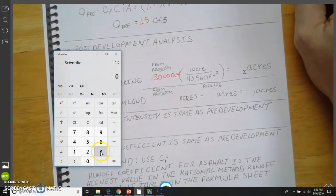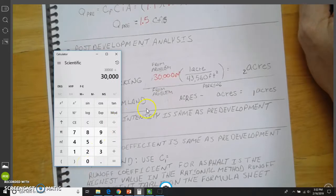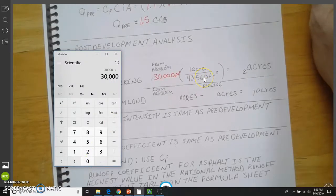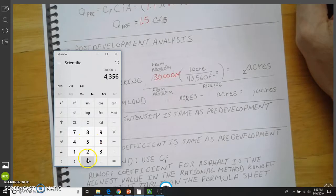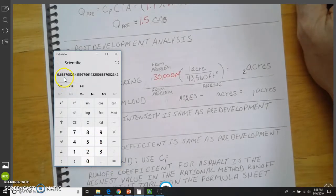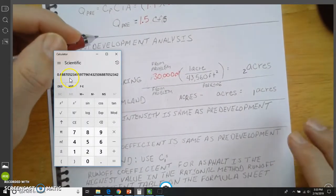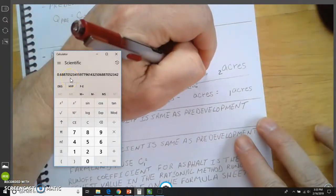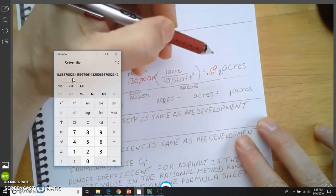I'm going to take this 30,000 and divide that by 43,560. So I'm going to divide that by 43,560 equals 0.688. So I'm going to round that. And that becomes 0.69 acres.